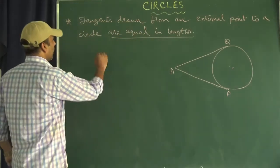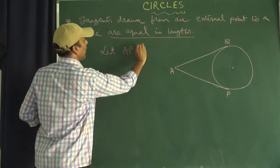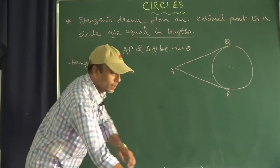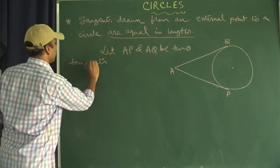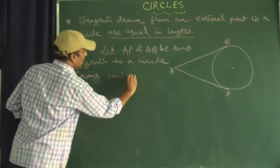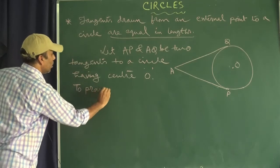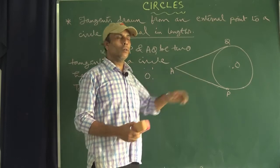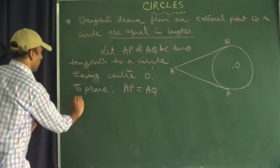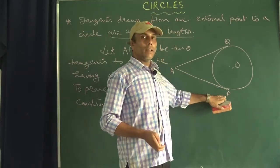Let AP and AQ be two tangents to a circle having center O. To prove: length of these two tangents are equal, that means we have to prove AP equal to AQ. For that we need some construction. Let us draw the construction: OP and OQ are joined.